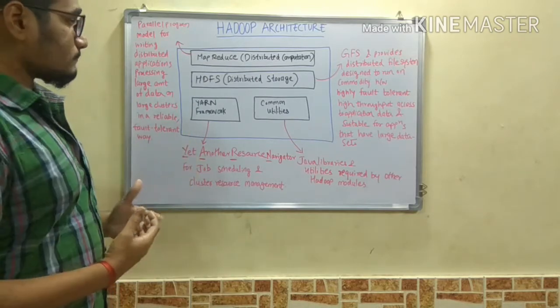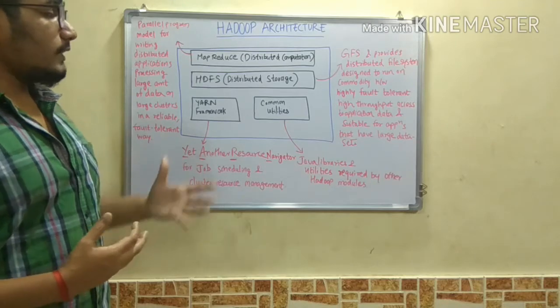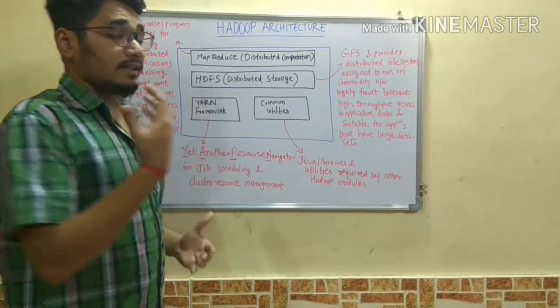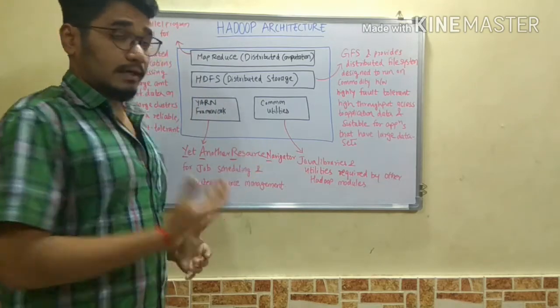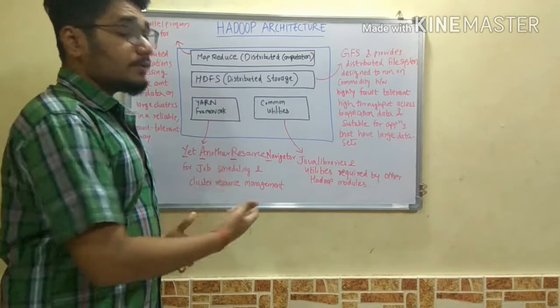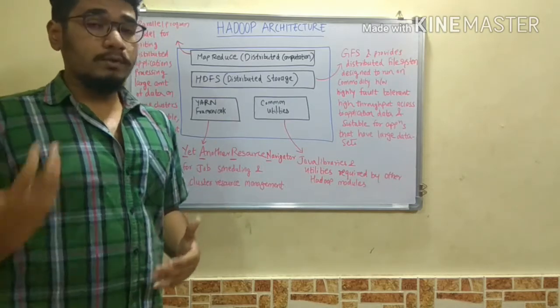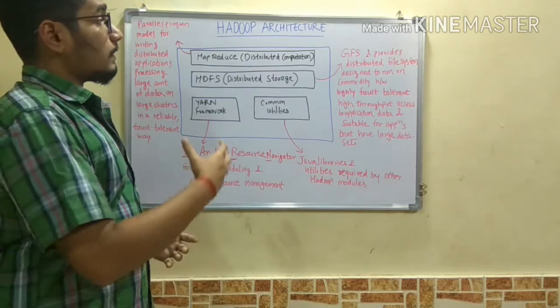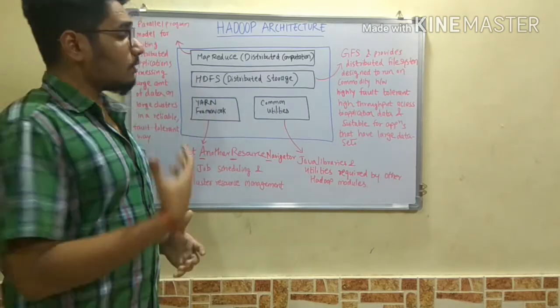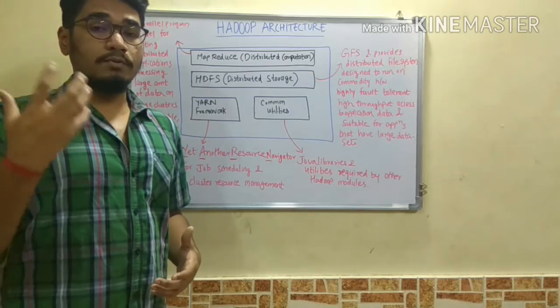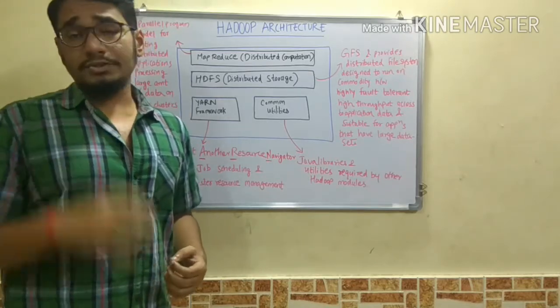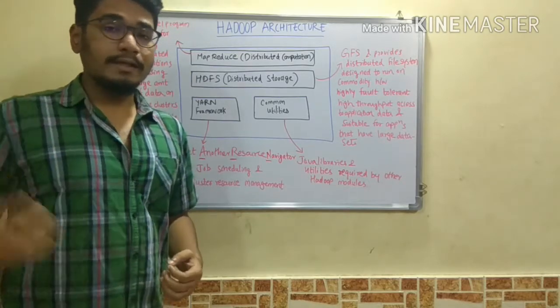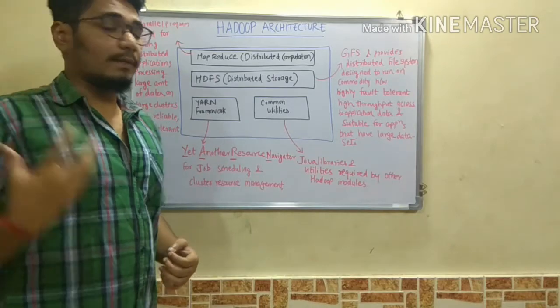Next, we talk about common utilities. These common utilities are the Java libraries required by other Hadoop modules. When we talk about the Hadoop ecosystem, there are many supporting modules for creating the Hadoop architecture. For importing the essential packages required to collaborate and integrate the entire ecosystem, we need utilities or libraries. Those libraries are contained in the common utilities.